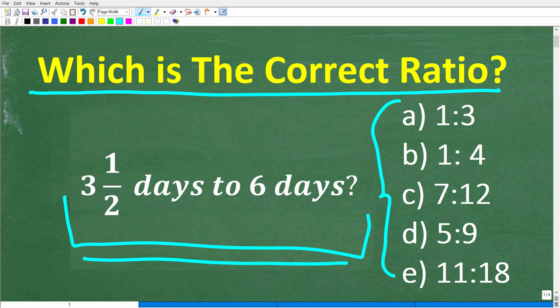So let's kind of take a look at our choices. A is 1 to 3. B is 1 to 4. C is 7 to 12. D is 5 to 9. And E is 11 to 18.